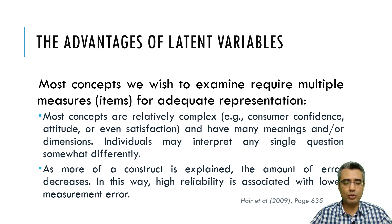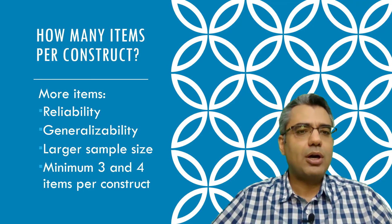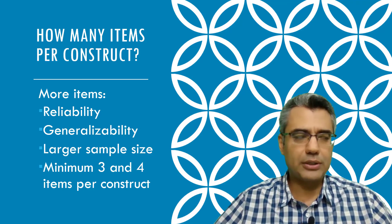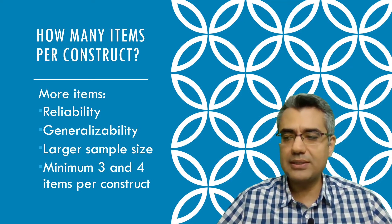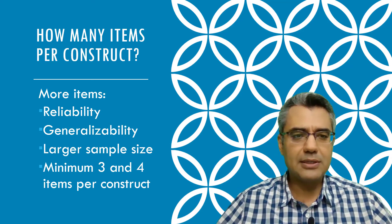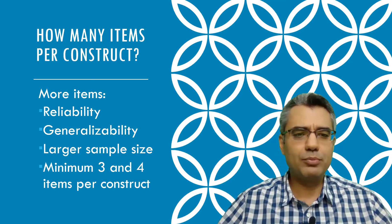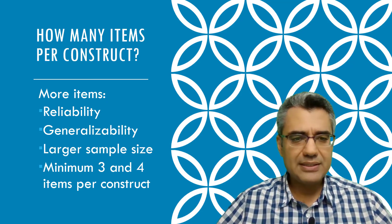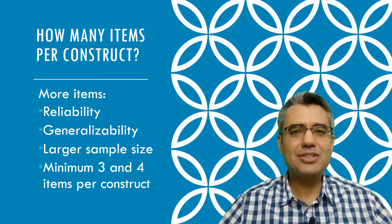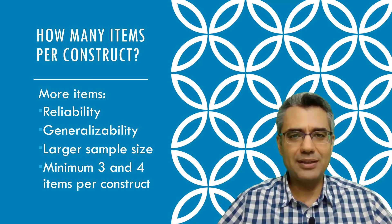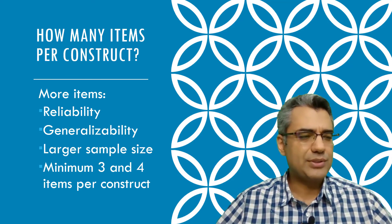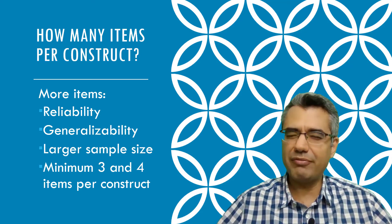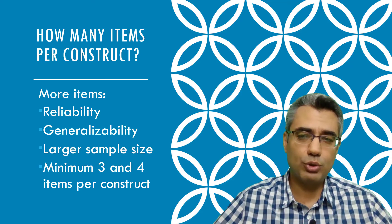How many items do we need per construct? Based on this argument, more items means more reliability for each construct, and you may also improve the generalizability of your findings. However, more items means you need a larger sample size to test your model, which can be a big challenge. There are rules of thumb — some people say you need between 5 to 20 samples per item in your questionnaire. But some argue this is not a good method for computing sample size, and that power analysis should be used instead.